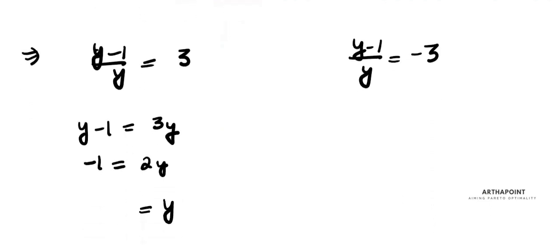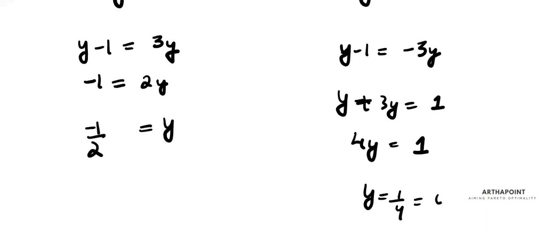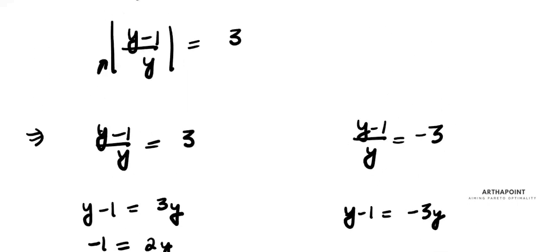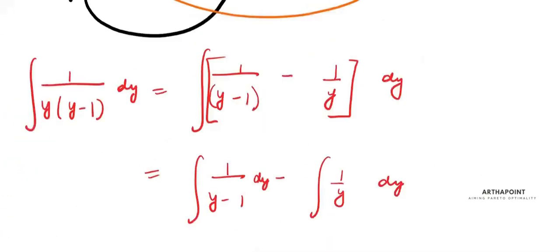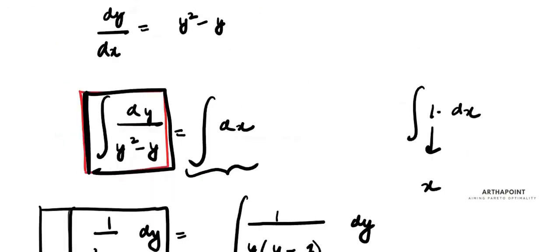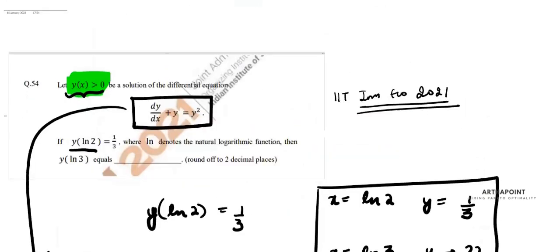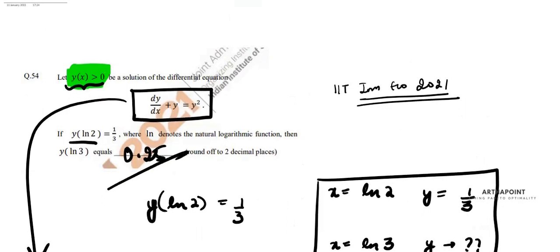Since y(x) > 0, we discard the negative value y = -1/2 and take only the positive value. Therefore y = 1/4 = 0.25. The answer to this question is 0.25.